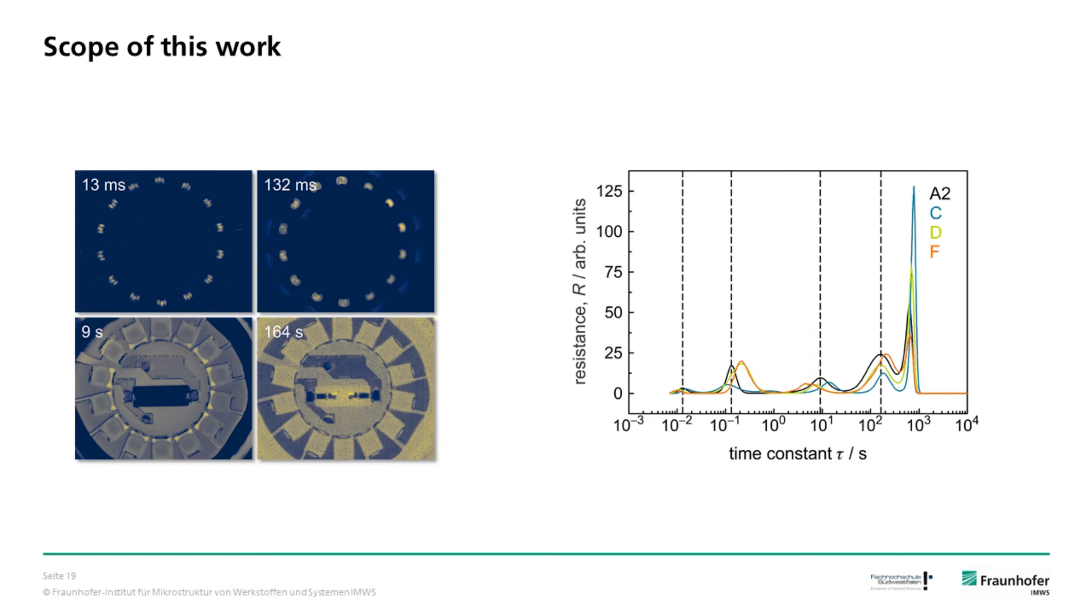On the left side of the slide, you see the amplitudes at the time constants as indicated on the right. At the time constant of 13 milliseconds, the center of the LED cools down. Then at the time constant of 132 milliseconds, the LED chip cools down. Later, with a time constant of 9 seconds, the PCB shows up. And at the end, with a time constant of 164 seconds, the lamp socket cools down.